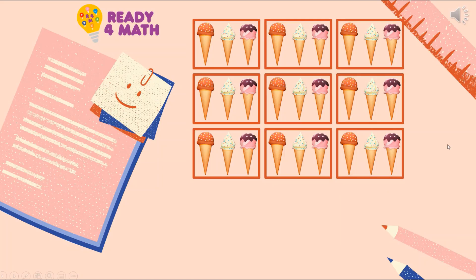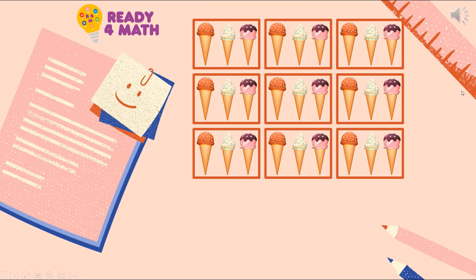What about this one? How many cones of ice cream do we have here? Let's try to skip count: 3, 6, 9, 12, 15, 18, 21, 24, 27. That's right — we have 27 cones of ice cream. Another way to represent this is through the multiplication sentence: 9 times 3 is equal to 27.